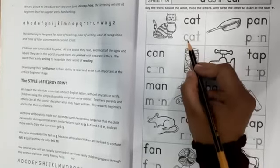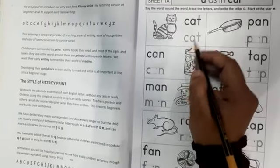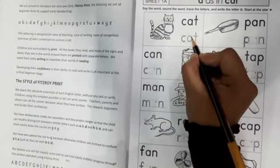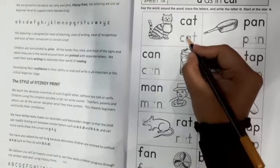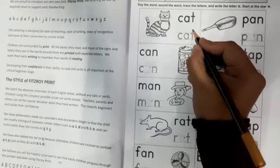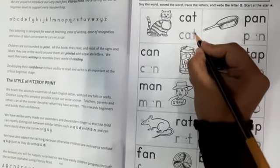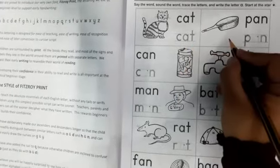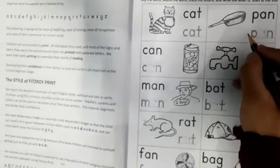So this is a cat. K, A, T, cat. So first one is already done for you. You have to trace it in this case. Now read it again. K, A, T, cat. Now move to next one.